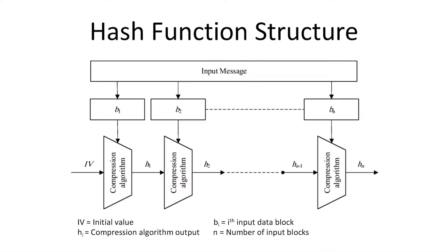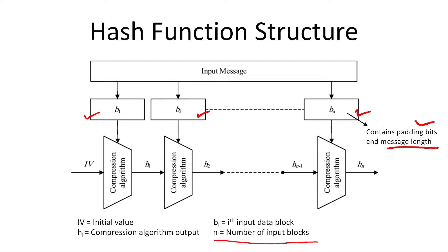This figure shows the structure used by most cryptographic hash functions. We first partition the input into blocks of fixed length, then process these blocks sequentially, much like block ciphers. The block size to be used is defined by the specific hashing algorithm. If the last block has fewer bits than the block length, we add padding. The last block also stores the message length, which is the size of the input on which we are calculating the hash value.